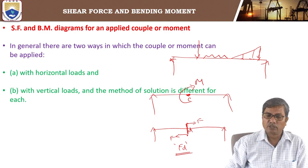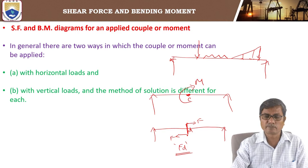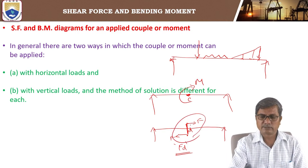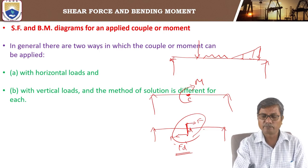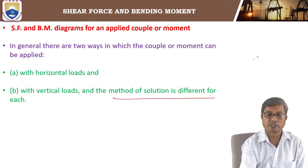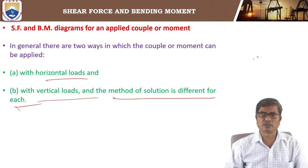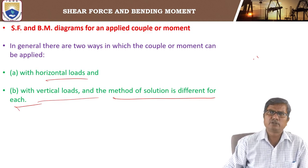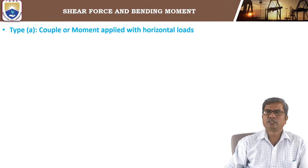There are two ways in which a couple or moment can be applied. One way is with two horizontal loads: the couple is applied using two equal and opposite horizontal forces separated by a small distance. The other way uses vertical loads. The method of solution is different for each case.